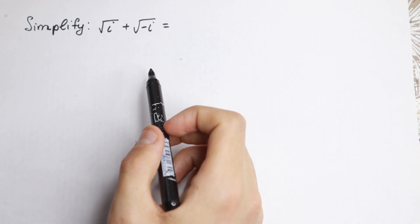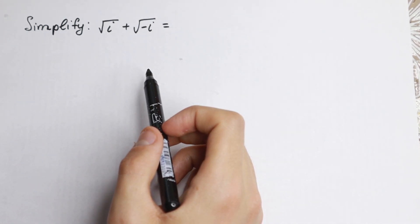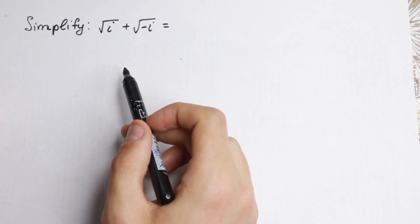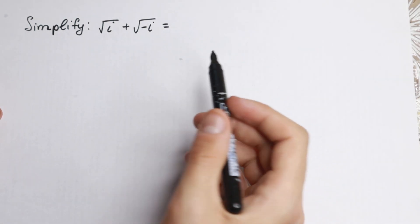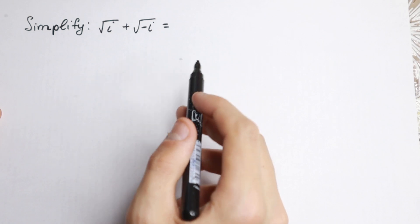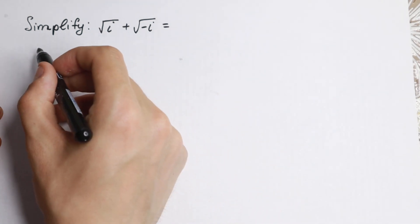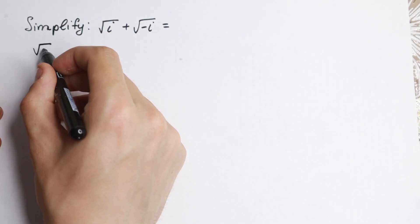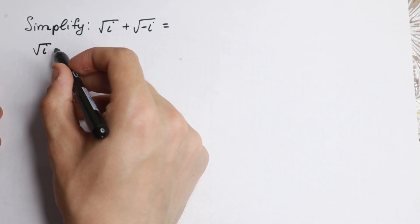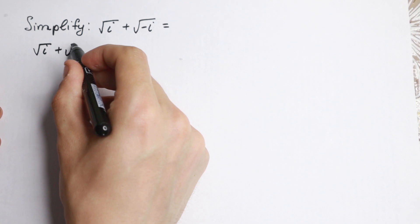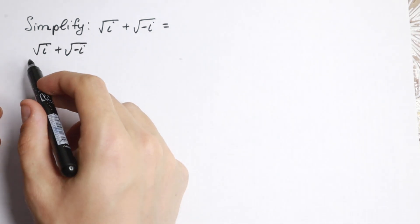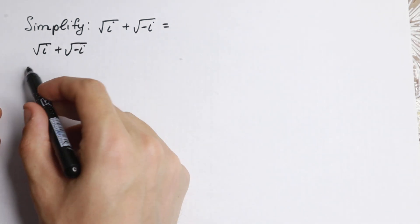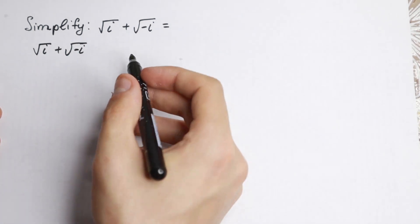How can we do it? On the internet there are a lot of solutions to this problem, so you can find the solution you want. But I want to show you the next solution — how we can find it really quickly. Take a look closely. We need to find square root of i plus square root of minus i, but we don't know exactly the value of these two elements.